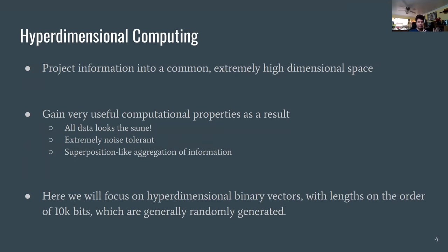Information is represented as points in the hyperdimensional space, called hypervectors or hyperdimensional vectors. Because all data has the same representation and they have a superposition-like quality, you gain useful properties for AI. In this talk, the focus is on hyperdimensional binary vectors with lengths on the order of about 10,000 bits — essentially 10,000-component-long binary vectors — and most of the time they are randomly generated.